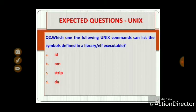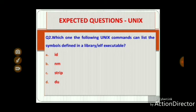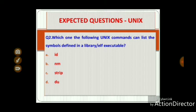Question 2: Which one of the following Unix commands can list the symbols defined in a library or ELF executable? Option A: id, Option B: nm, Option C: strip, Option D: do. The correct answer is Option B — nm. The nm command provides information on the symbols being used in an object file or executable.